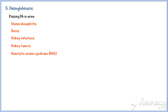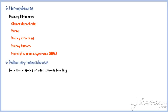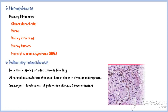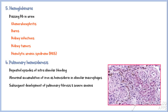Pulmonary hemosiderosis is another cause. In this condition, repeated episodes of intra-alveolar bleeding occur, resulting in abnormal accumulation of iron as hemosiderin in alveolar macrophages, with subsequent development of pulmonary fibrosis and severe anemia. In this picture you can see the hemosiderin-laden macrophages stained in brown.